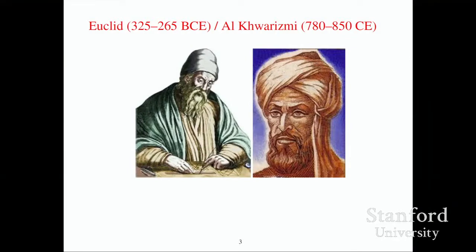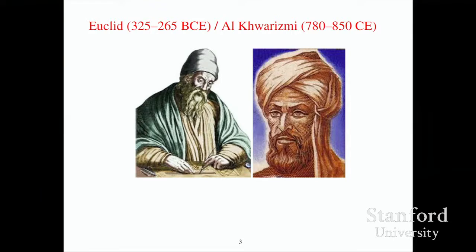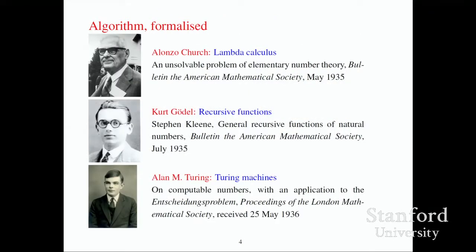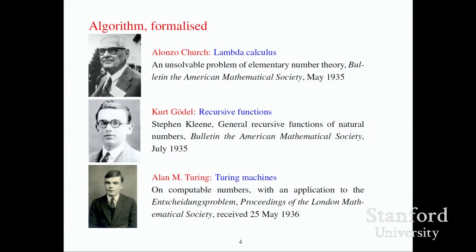An algorithm is a sequence of instructions executed by a computer. Today we think of a computer as a machine, but originally it was a person — the woman or the man who executed the algorithm. Algorithms go back to Euclid's Elements in classical Greece and eponymously to Al-Khwarizmi in 9th century Persia. But it wasn't until the 20th century that we get formal definitions of algorithm, when three papers appeared: Alonzo Church describing lambda calculus, Kurt Gödel describing recursive functions, and Alan Turing describing what we now call Turing machines, all within a year of each other.